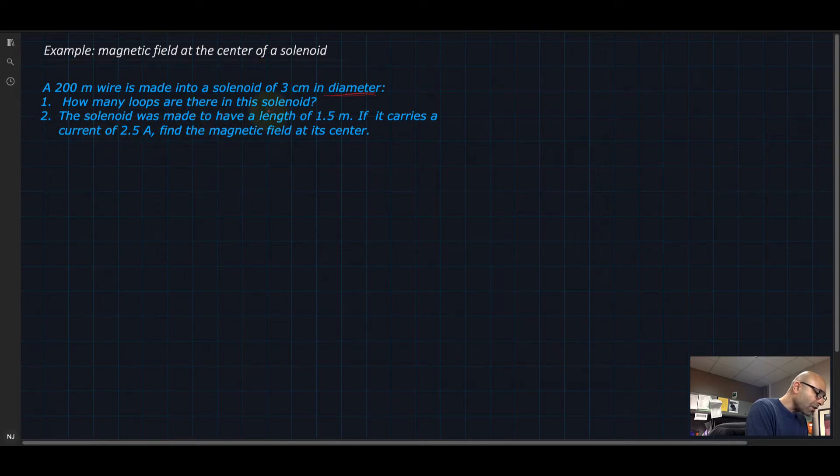How many loops are there in this solenoid? So we have a very long wire, and this wire has a length of 200 meters and we want to make it into a solenoid.